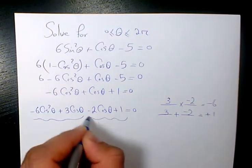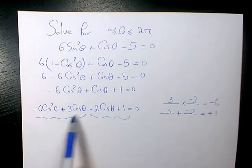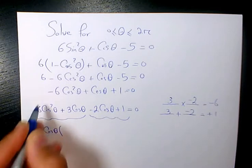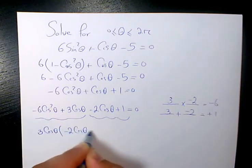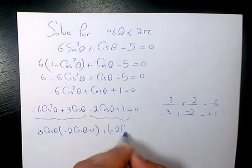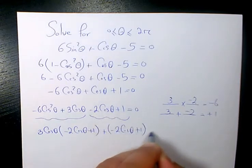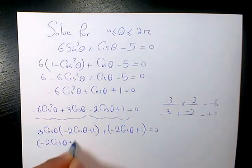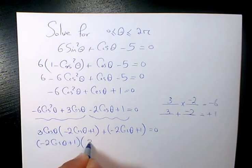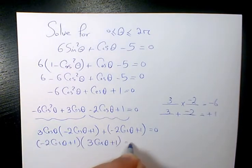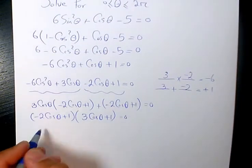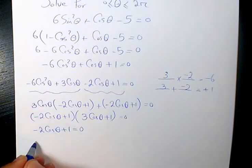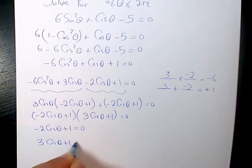Then I factor by grouping. From the first two terms I factor out 3 cosine theta, which gives negative 2 cosine theta plus 1. And from the last two terms I have negative 1 times (2 cosine theta minus 1). Factoring out (negative 2 cosine theta plus 1) leaves (3 cosine theta plus 1)(negative 2 cosine theta plus 1) equals to 0.